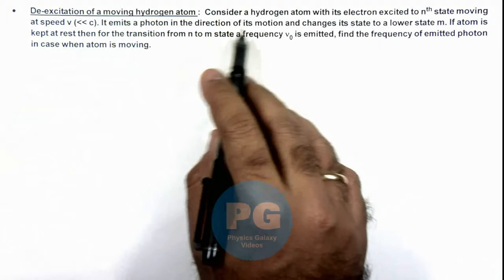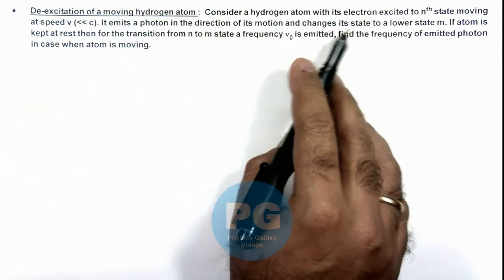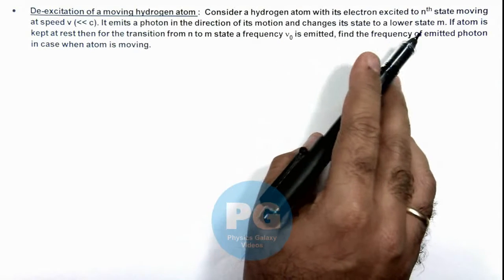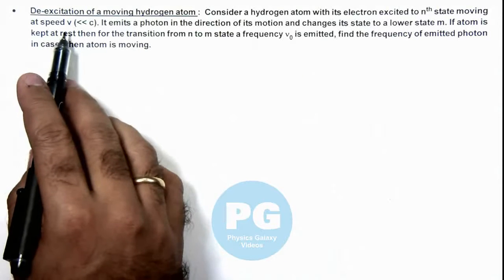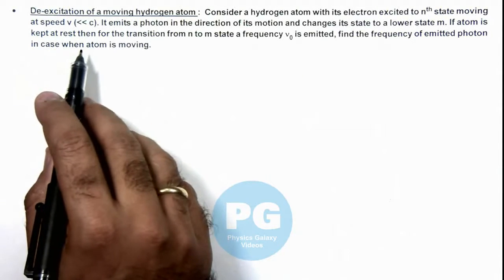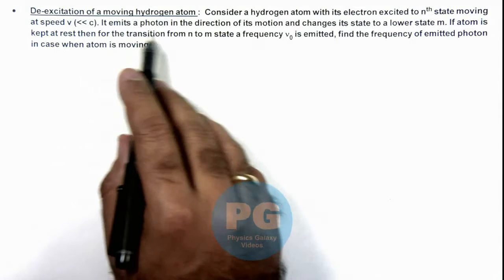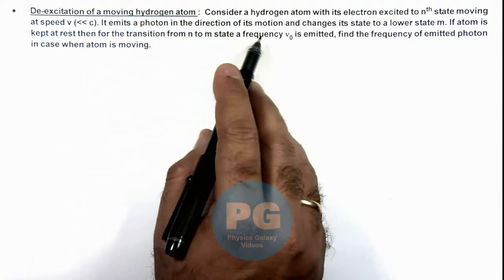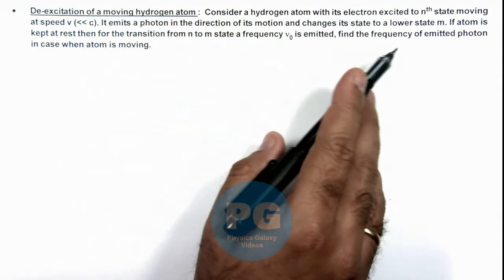Here we are given to consider a hydrogen atom with its electron excited to nth state moving at a speed v, where the speed is very less compared to speed of light.